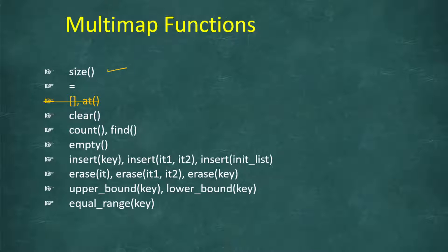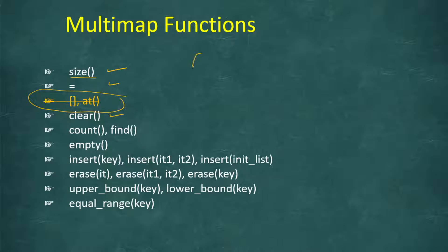Let's look at some functions. Just like map or any other STL container, we can use size() to get the number of elements. It does not return only the unique keys - since duplicate keys are also inserted, it returns the total count of all elements present in the map. This can be used to assign or initialize a multimap. clear() will remove all elements. Note that the subscript operator [] and .at() are not available in multimap.